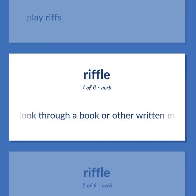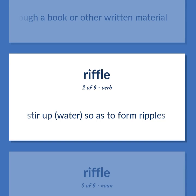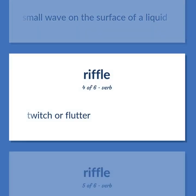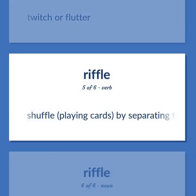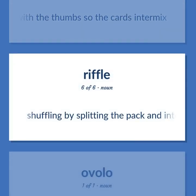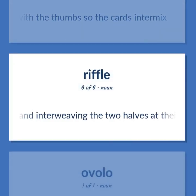Riffle: Look through a book or other written material. Stir up water so as to form ripples. A small wave on the surface of a liquid. Twitch or flutter. Shuffle playing cards by separating the deck into two parts and riffling with the thumbs so the cards intermix. Shuffling by splitting the pack and interweaving the two halves at their corners.